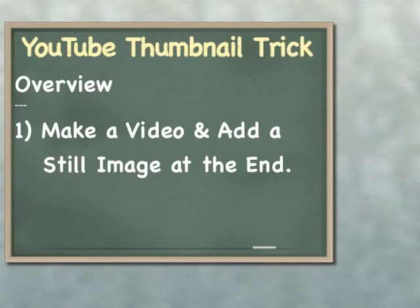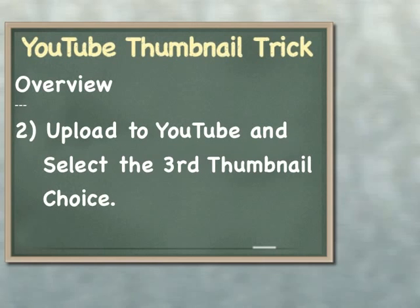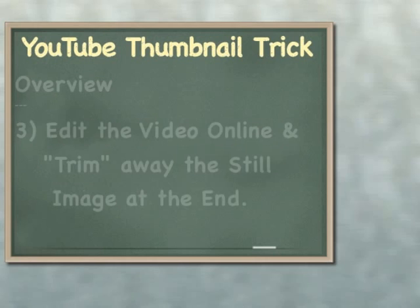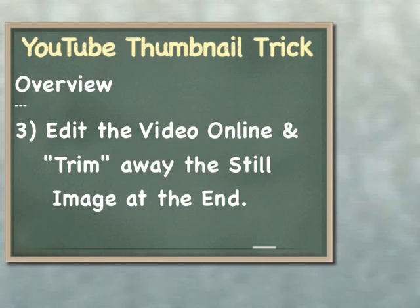Here's the overview. First, you make your video and add the desired thumbnail image as a still image for a long time at the very end. Second, you upload the video to YouTube and select the third thumbnail icon. Third, you edit the video in YouTube by trimming off the extra still image from the end of the video. Then save it, and you're done.